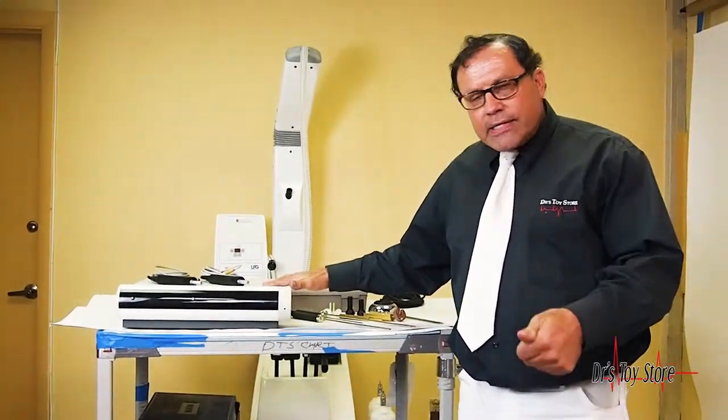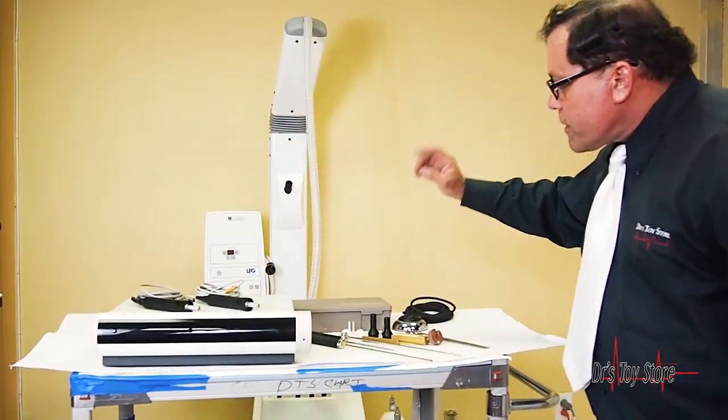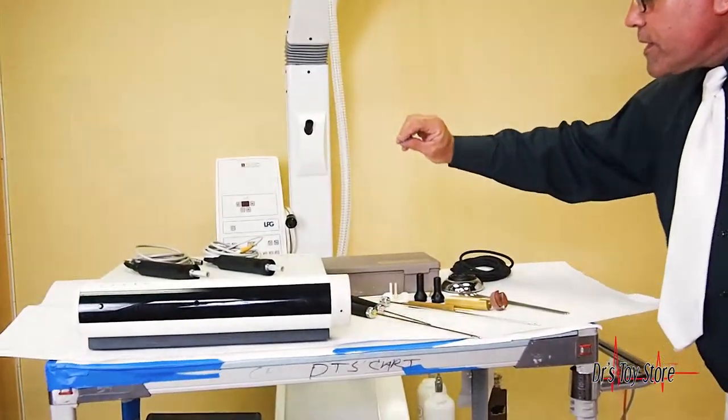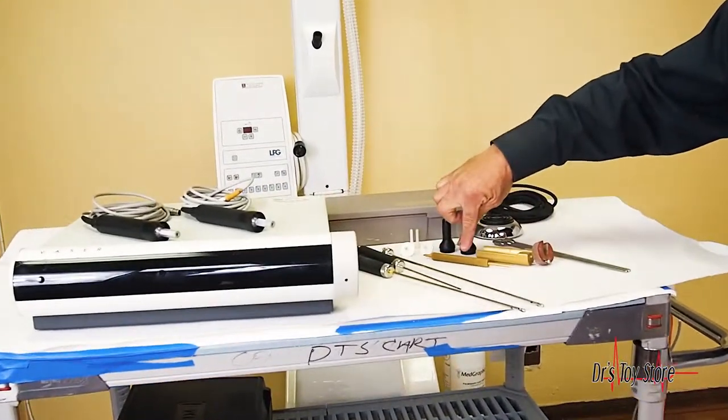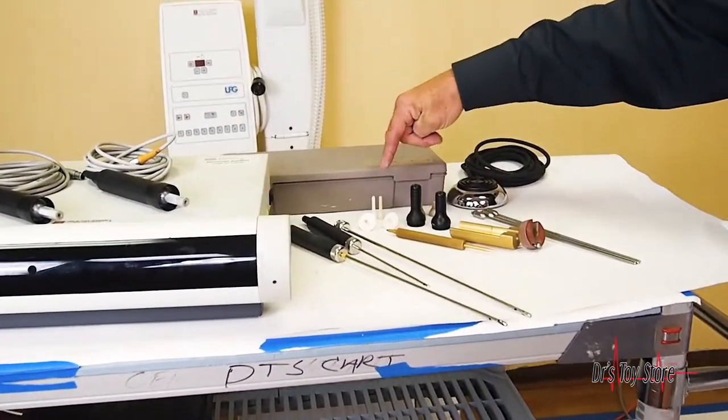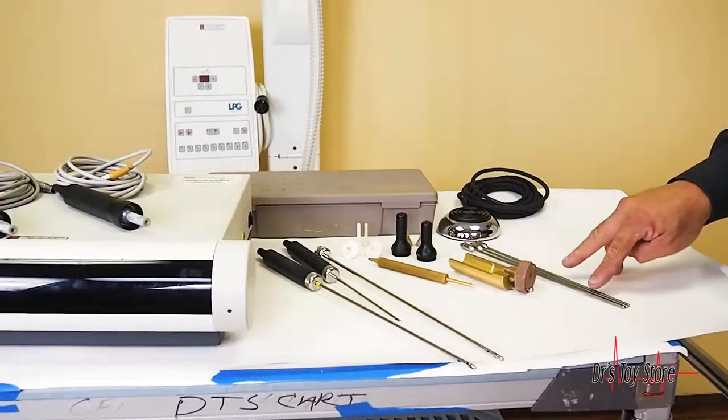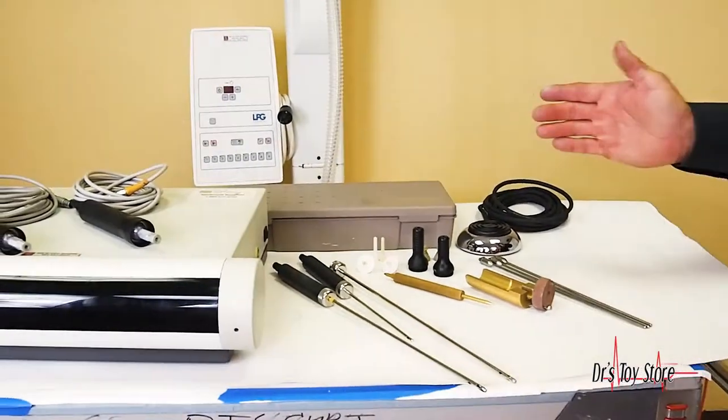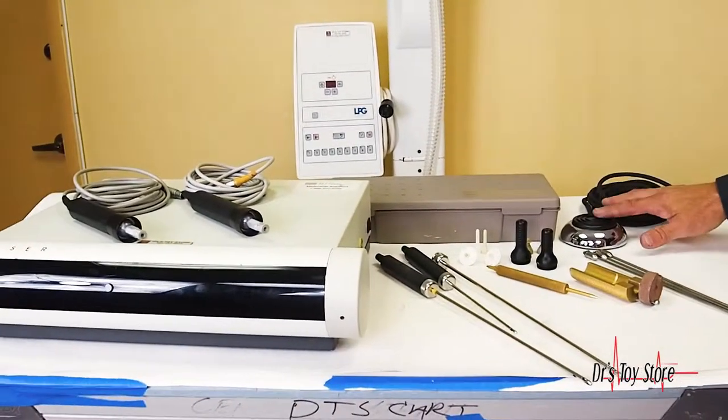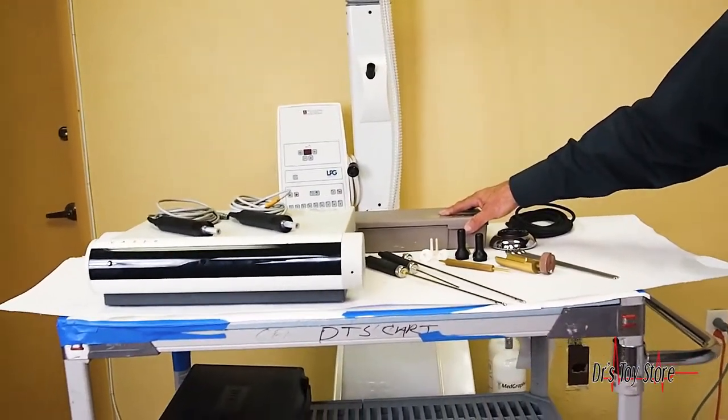These are the hand pieces. It comes with two hand pieces, infiltration cannulas, the skin piercing device, the skin ports, the locking device, the nose cones, three tips. We can adjust the tips either way. The foot control and the autoclavable box to sterilize everything.